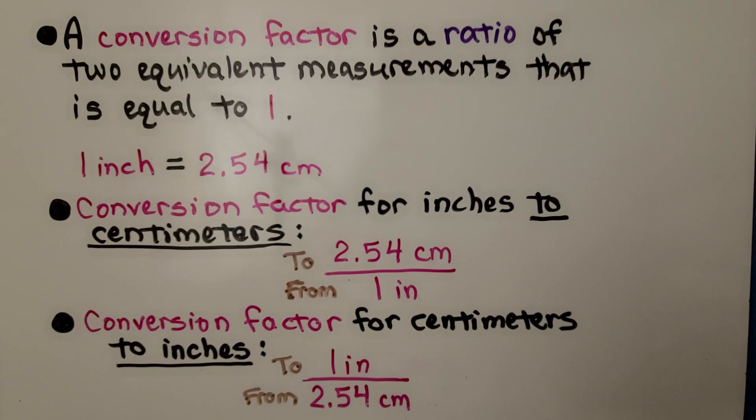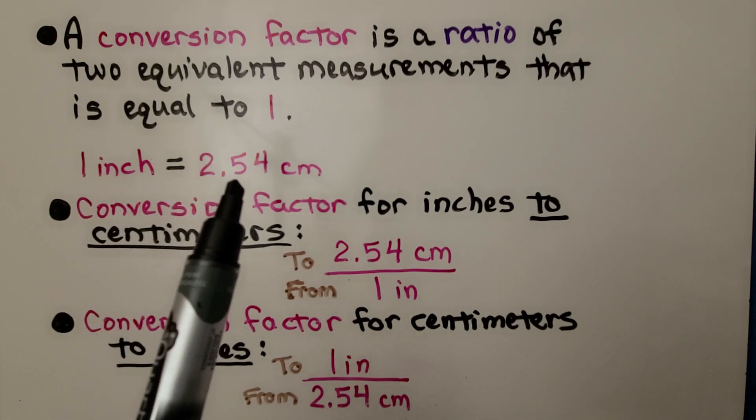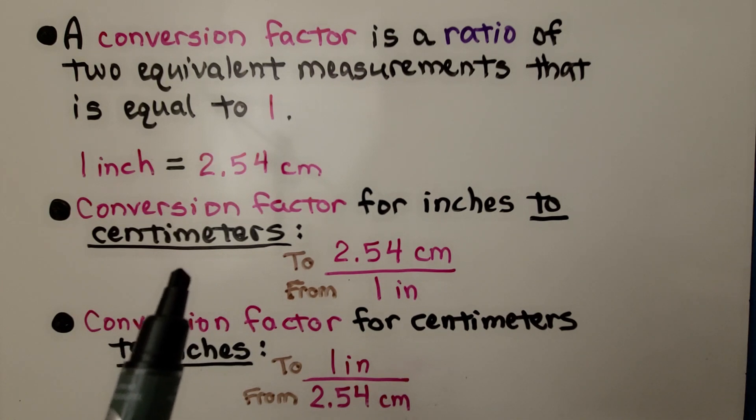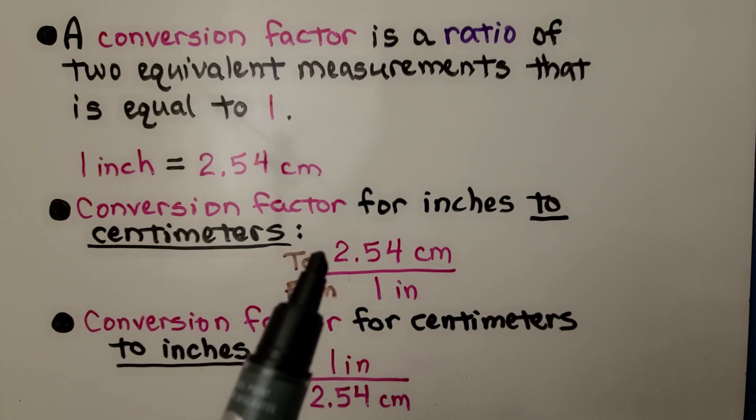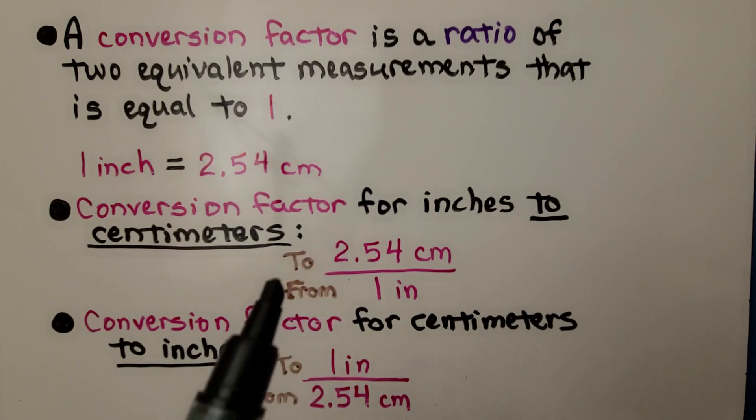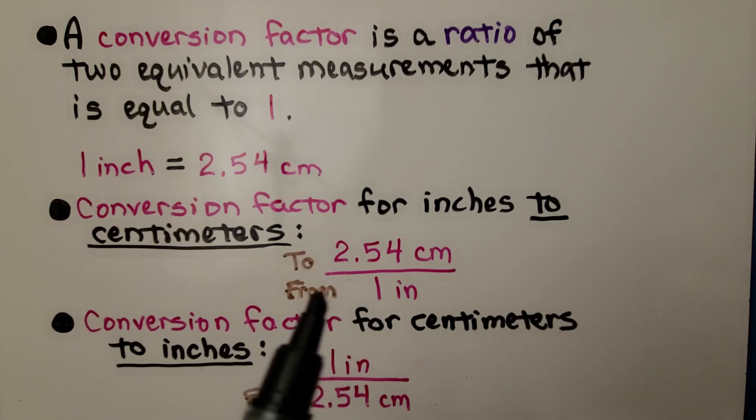So a conversion factor is a ratio of two equivalent measurements that is equal to 1. If 1 inch is equal to 2.54 centimeters, the conversion factor for inches to centimeters would be 2.54 centimeters over 1 inch. The 'from' unit is the denominator. For a conversion factor from centimeters to inches, centimeters is now the denominator.